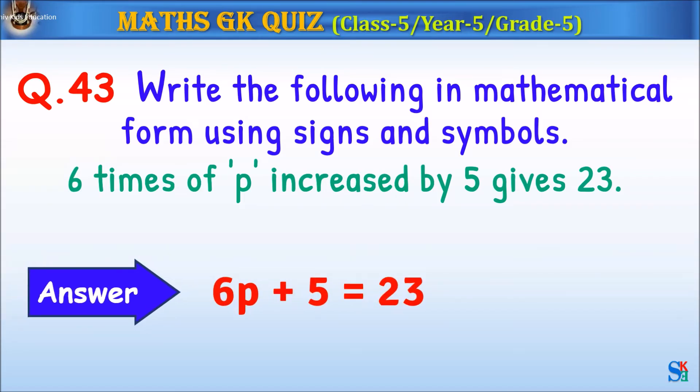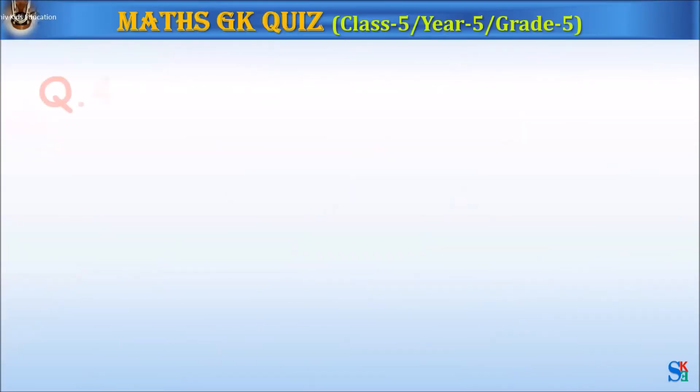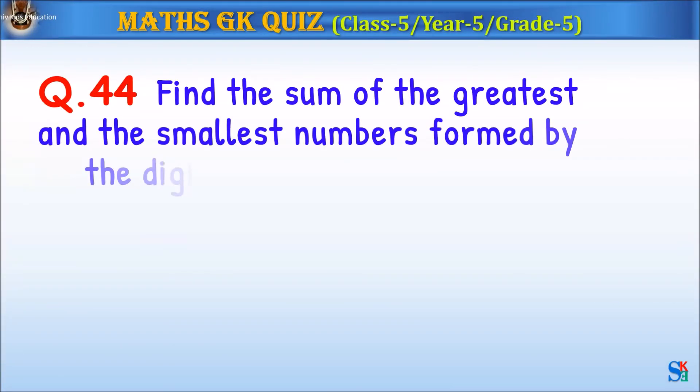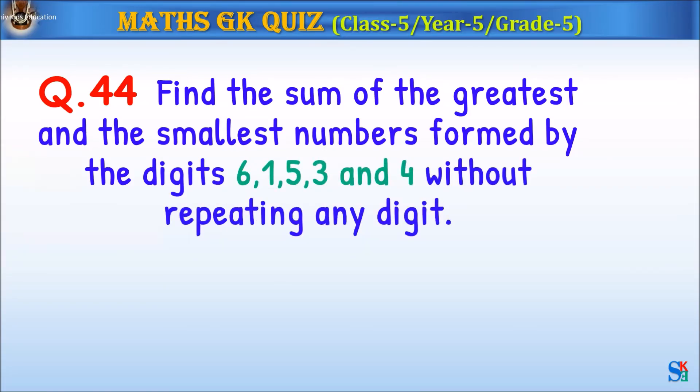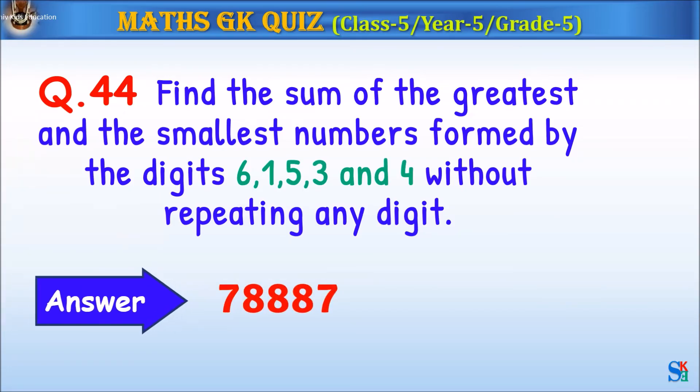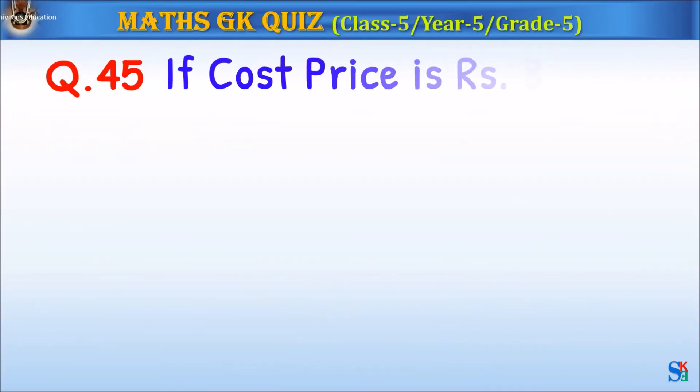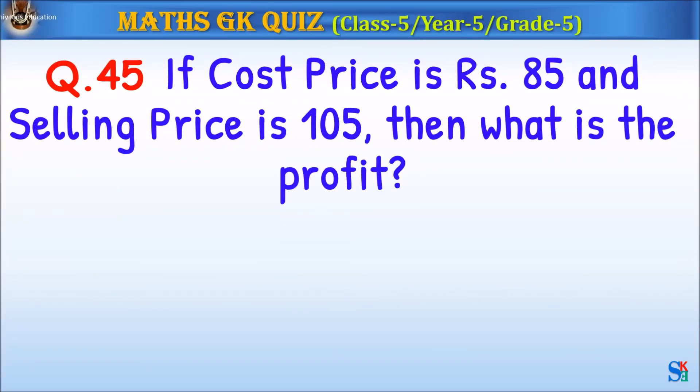Question 43: Write the following in mathematical form using signs and symbols. The answer is 6P plus 5 equals 23. What is the value of P? Comment down below. Question 44: Find the sum of the greatest and smallest numbers formed by the digits 6, 1, 5, 3, and 4 without repeating any digit.